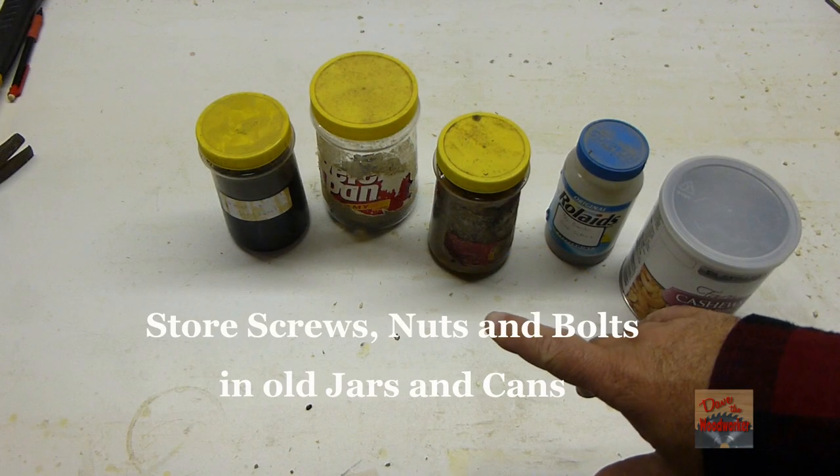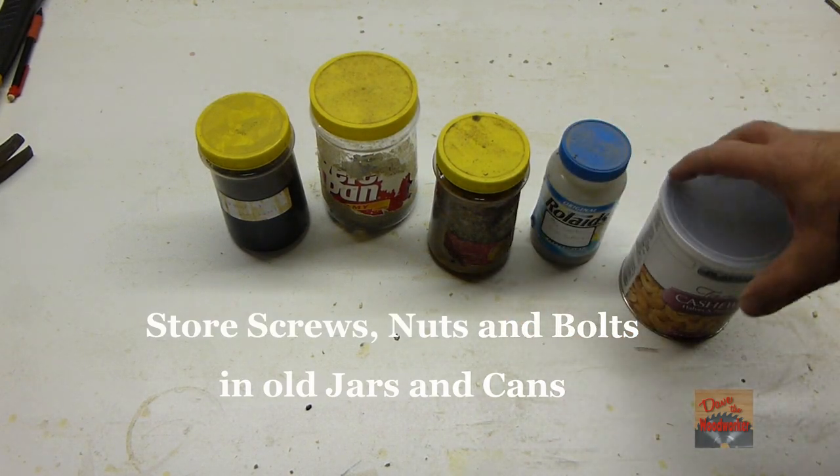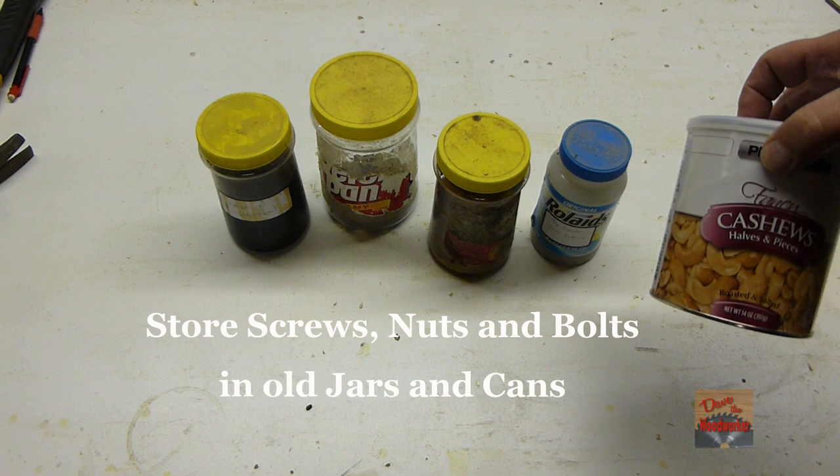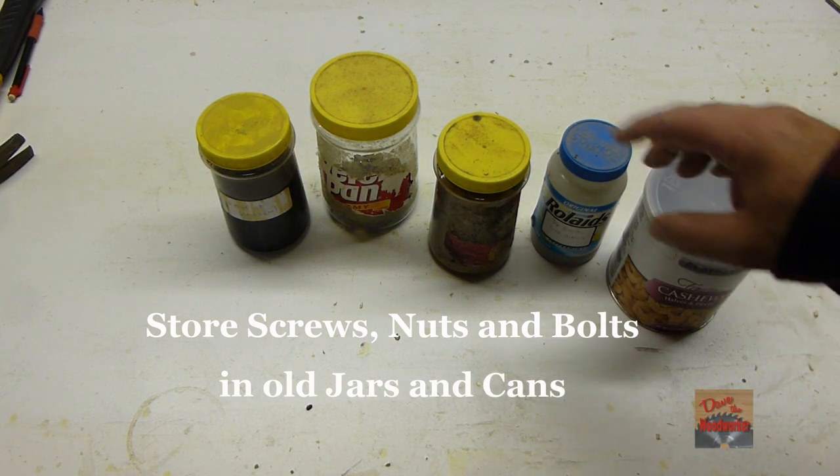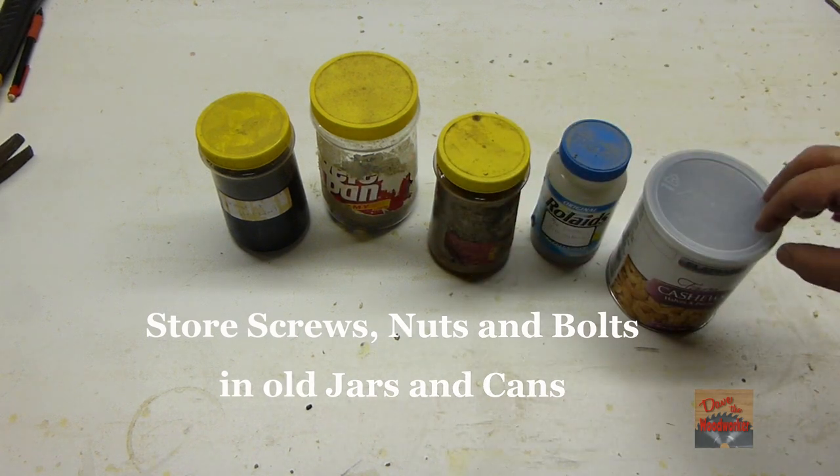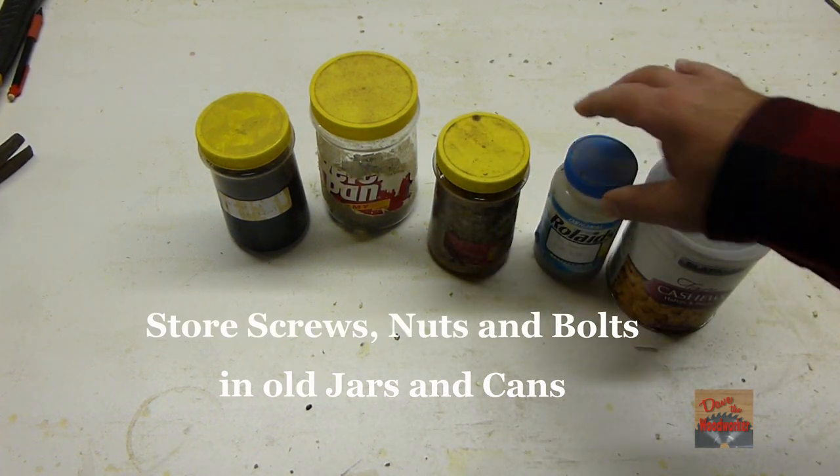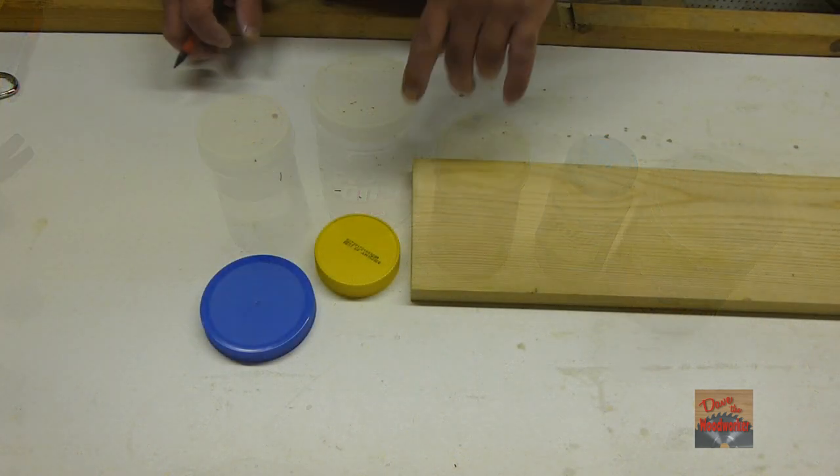Use old peanut butter jars, pill bottles, or nut cans to store screws. I've got steel wool and vinegar in one, little screws in this one. They're good for storage.